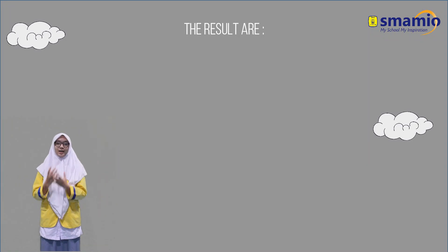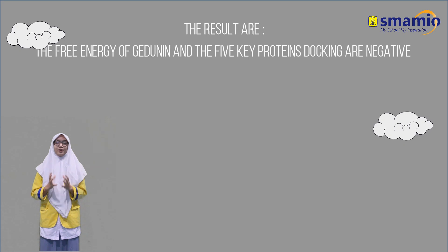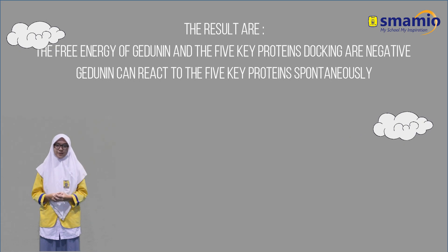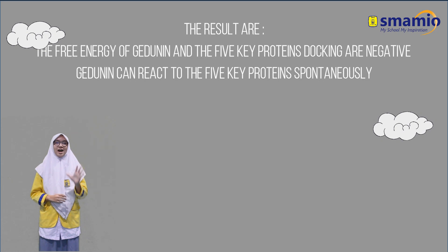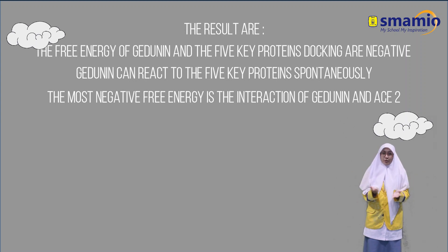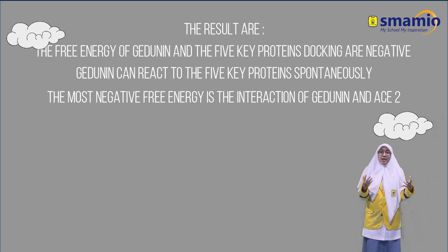Docking carried out on Gedunin with the 5 key proteins in the SARS-CoV-2 life cycle gave good results. The interactions between the two produced negative values of binding free energy, showing that Gedunin can react spontaneously with the 5 main proteins. The interaction of Gedunin with key proteins that has the most negative value of free energy is the interaction with ACE2 protein.